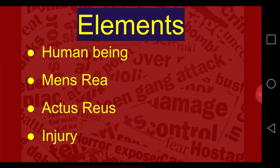First, we have to understand the meaning of crime. There should be some action — basically, there should be some action against someone. Because of the action, or because of the omission of some action, some injury should happen. That is the meaning of crime.